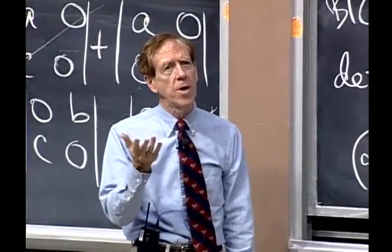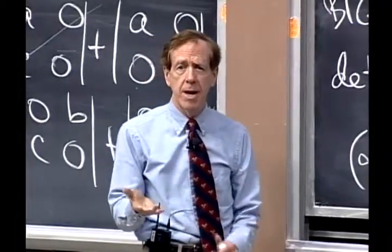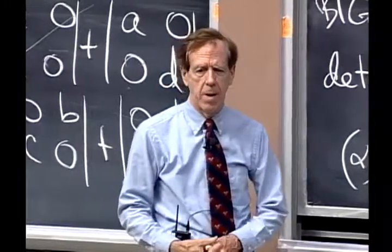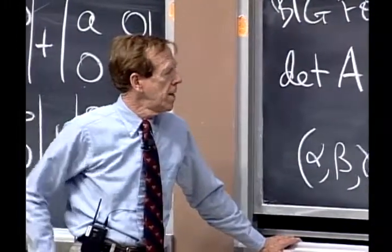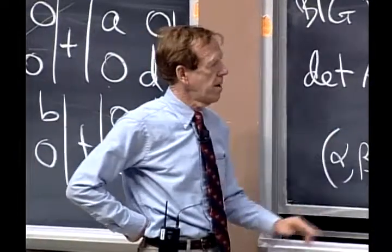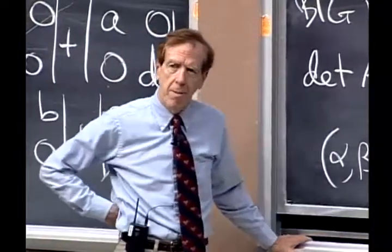How would I know that the determinant of the identity matrix was one, for example, out of this formula? Why is, if A is the identity matrix, how does this formula give me a plus one?